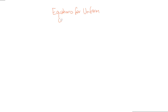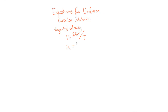Finally, let's review our equations for uniform circular motion. Firstly, the tangential velocity v is equal to 2πr divided by big T, the period. The centripetal acceleration is equal to v squared divided by r, the radius. The force on an object undergoing uniform circular motion acts radially inwards and is equal to the mass times the velocity squared divided by the radius.